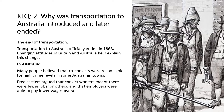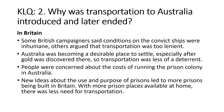Gradually, however, transportation to Australia was brought to an end. It officially ended in 1868, and there were changing attitudes in both Britain and Australia to explain this. In Australia, many people believed that ex-convicts were responsible for high crime levels in some towns. Free settlers argued that convict workers meant fewer jobs for others and that employers could pay lower wages overall. Many Australians resented the fact that Australia was being used as a dumping ground for British criminals, and there was an outcry about it.